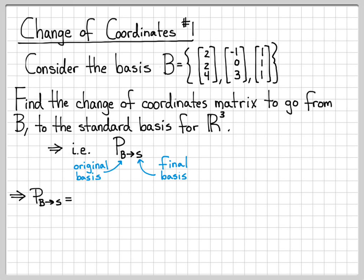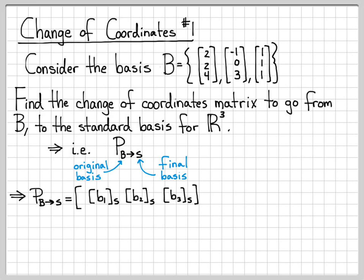How do we do this? In general, the equation for this change of coordinates matrix is pretty simple. Each column of this matrix is going to be a vector of our original basis written with respect to the basis we want to go to. So B1, B2, and B3 each need to be written with respect to the basis S, or the standard basis. That's the first column, second column, and last column respectively.